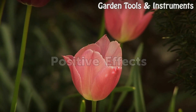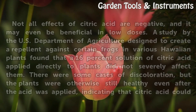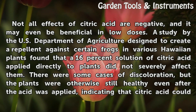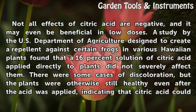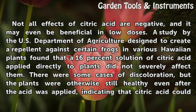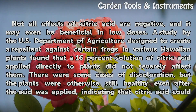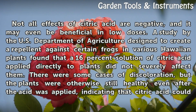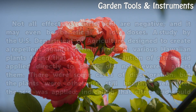Positive Effects. Not all effects of citric acid are negative, and it may even be beneficial in low doses. A study by the U.S. Department of Agriculture designed to create a repellent against certain frogs in various Hawaiian plants found that a 16% solution of citric acid applied directly to plants did not severely affect them. There were some cases of discoloration, but the plants were otherwise still healthy even after the acid was applied, indicating that citric acid could be used as a repellent.